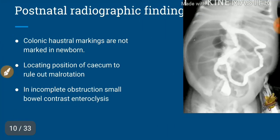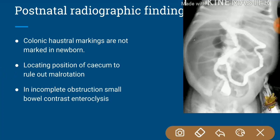In incomplete obstruction, there will be rectal gas but also dilated ileal loops. Even if we put in contrast, the contrast enema may be equivocal. Then we have to go for a small bowel barium follow-through or a small bowel contrast enteroclysis. These are the roles of contrast studies in ileal atresia.